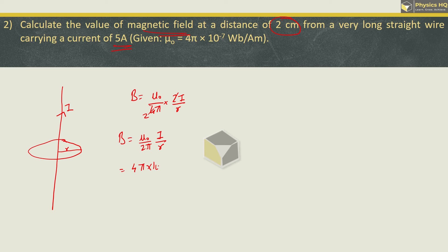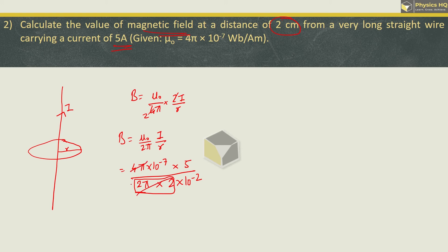μ₀ = 4π × 10⁻⁷, current I = 5 ampere, divided by 2π into the distance R = 2 cm = 2 × 10⁻² meter. The 2π in the denominator and 4π in the numerator cancel, leaving 5 × 10⁻⁷ / 10⁻² = 5 × 10⁻⁵ tesla. Hope you all understood this.